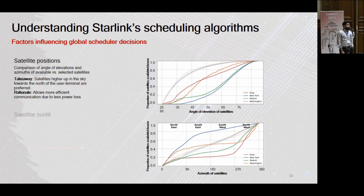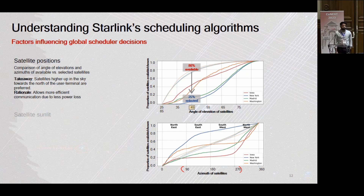These plots show the angle of elevations of available satellites in dotted lines and selected satellites in solid lines, with azimuths on the bottom in the same manner. For an angle of elevation of 45 degrees or below, around 80% of all available satellites had this angle of elevation — the majority were available from this lower region of the sky. However, only 25% of the satellites were selected from this region. Similarly for azimuths, considering the middle two coordinates showing the area towards the south of the dish: although 40% of all satellites were available from this region, the global scheduler only ended up picking about 10% of these satellites. This shows the global scheduler has a strong preference for satellites which are higher up in the sky and towards the north, which allows more efficient communication due to lower power loss.